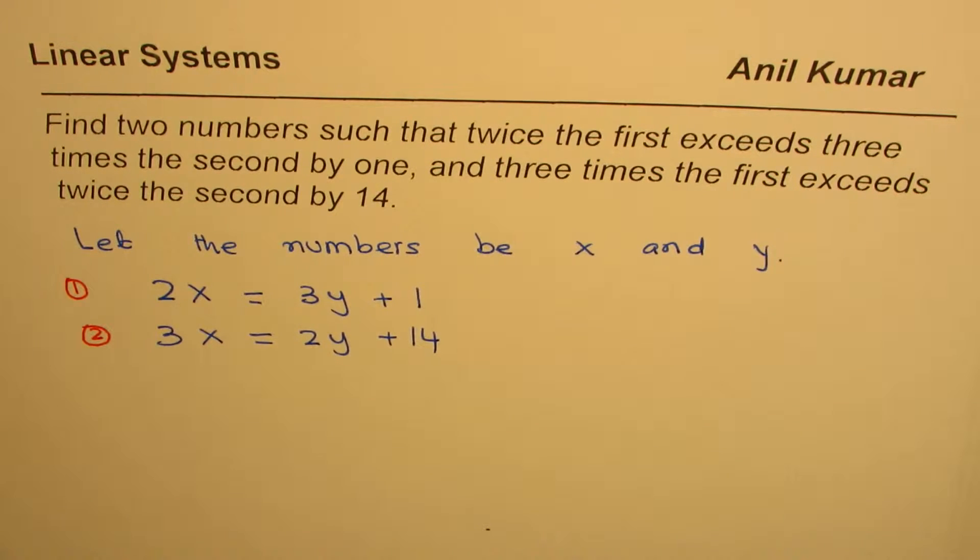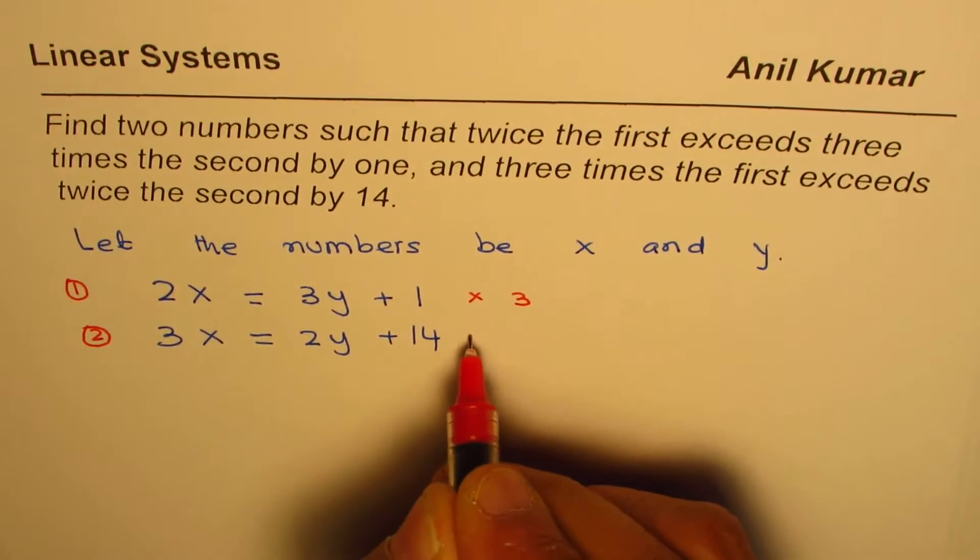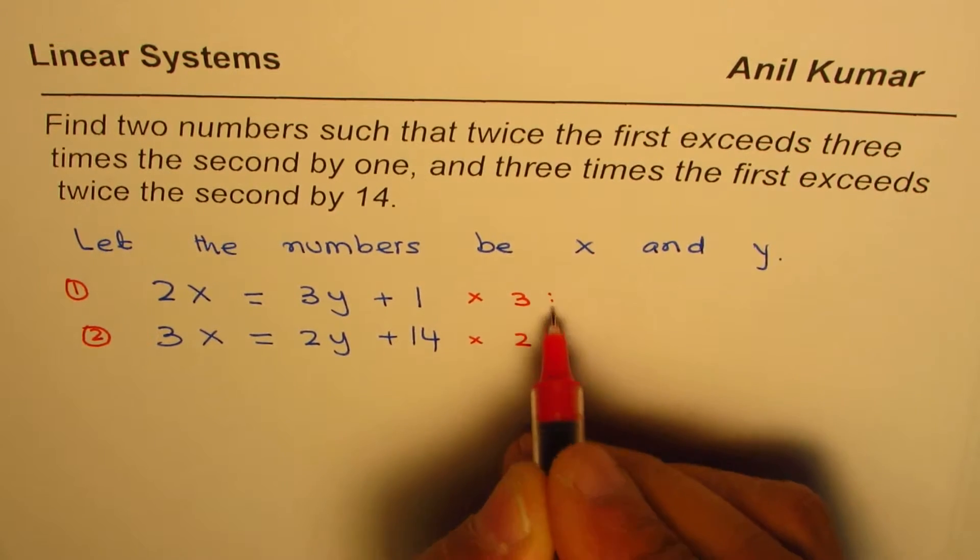To solve these equations, we can use elimination or substitution. If I multiply the first equation by 3 and the second by 2, what do we get? I'll multiply equation 1 by 3 and equation 2 by 2. Let me rewrite these equations. Times 3 gives us 6x = 9y + 3.